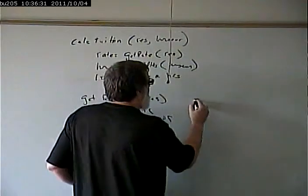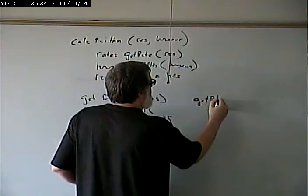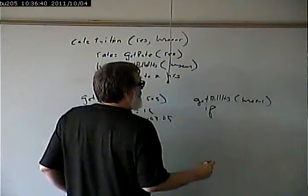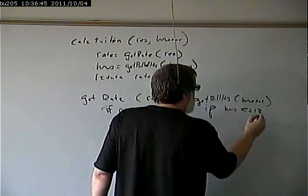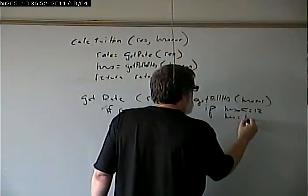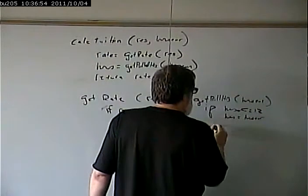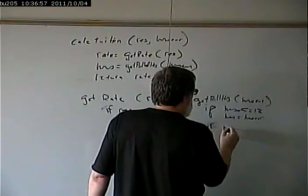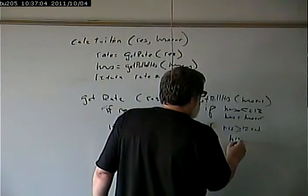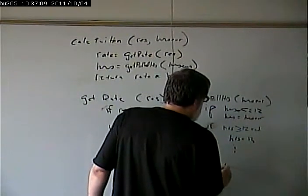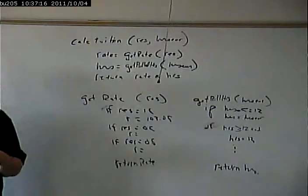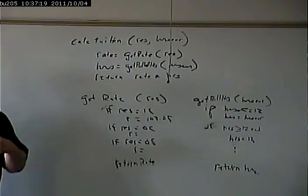Then we can go in and we can fill in the details and say if residency equals IC rate equals 103.05. If residency equals OC. If residency equals OS. And then we can return the rate. And then by the same token in our get hours function, get bill hours. We can have our series of if statements. If hours enrolled is less than or equal to 12. Hours equals hours enrolled. If hours greater than or equal to 12. And hours equal 13. And so on. And we can return hours.